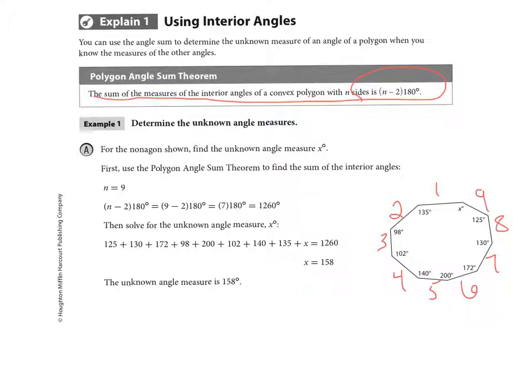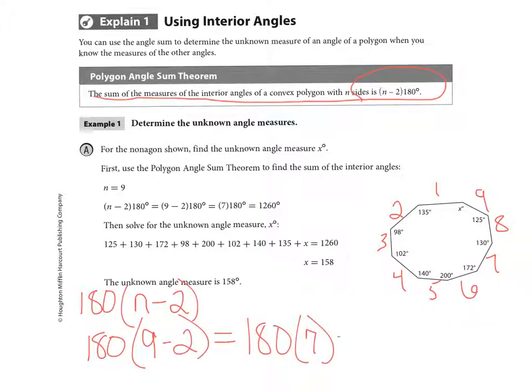And so I'm going to use the polygon angle sum theorem, and I'm going to say, which is n minus 2 times 180, and so I have 180 times 9 minus 2, n stands for the number of sides, which gives me 180 times 7, which gives me 1,260 degrees.